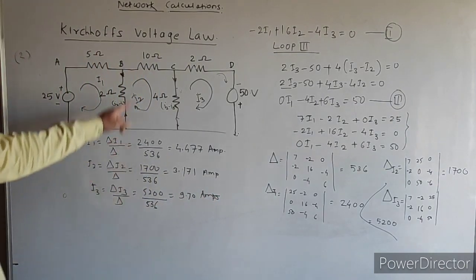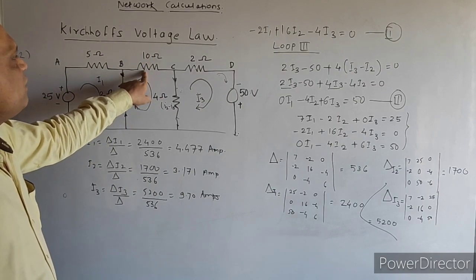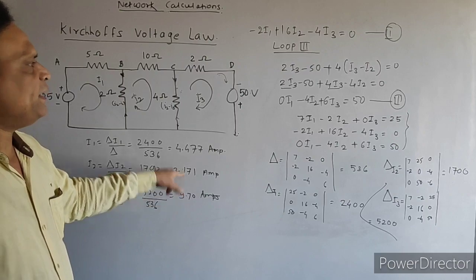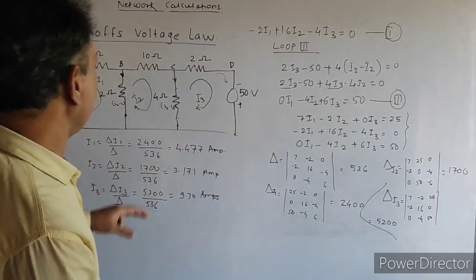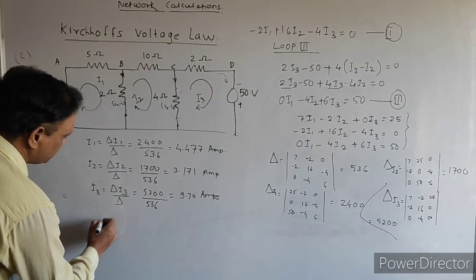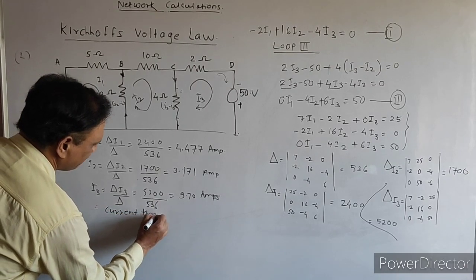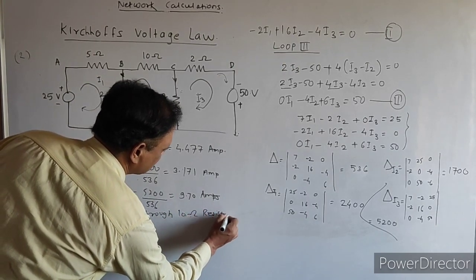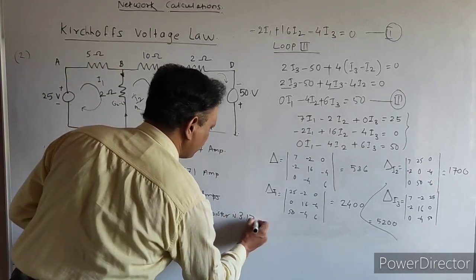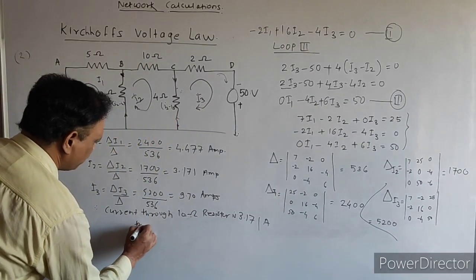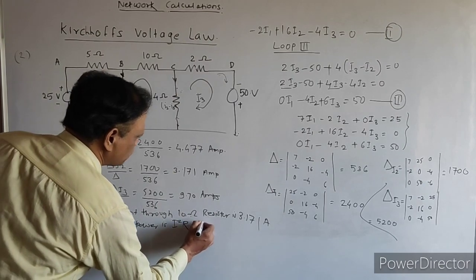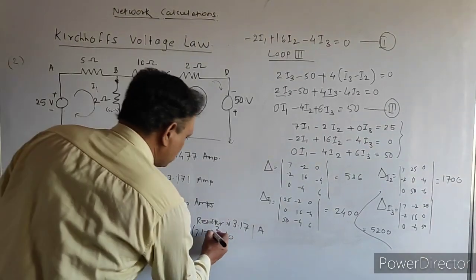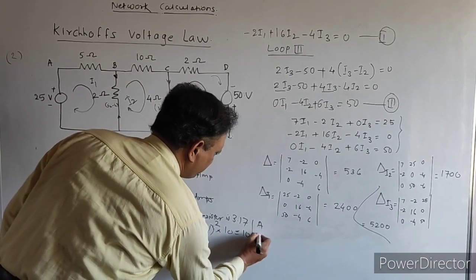Our question was to calculate the current through the 10 ohm resistor, which was I2 equals 3.171 amperes — the same answer found using Kirchhoff's current law. Power through the 10 ohm resistor equals I2 squared into R equals 3.171 squared into 10 equals 100.55 watts.